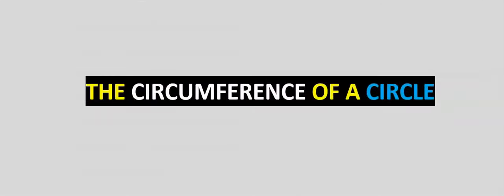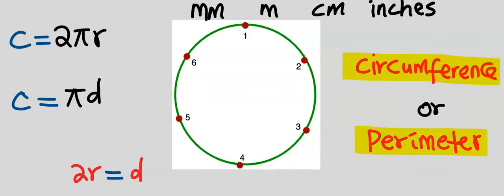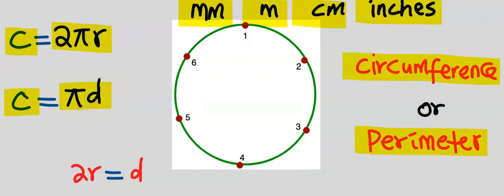Next, let's consider how to calculate the circumference of a circle. Circumference can also be known as perimeter, and the unit is in millimeters, meters, centimeters, or inches. The two formulas for calculating the circumference are 2 pi r — used when the radius is given — and pi multiplied by the diameter, used when the diameter is given.